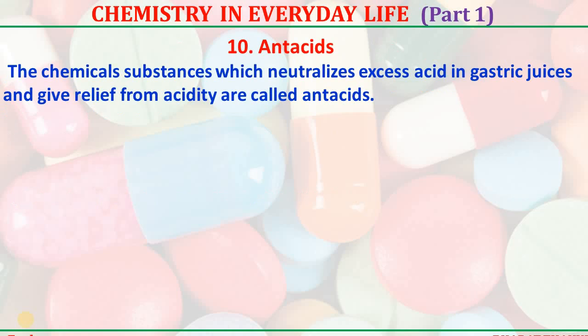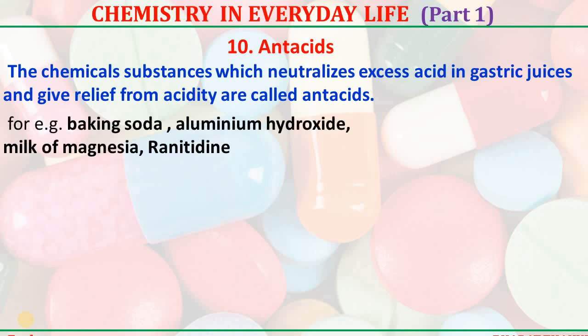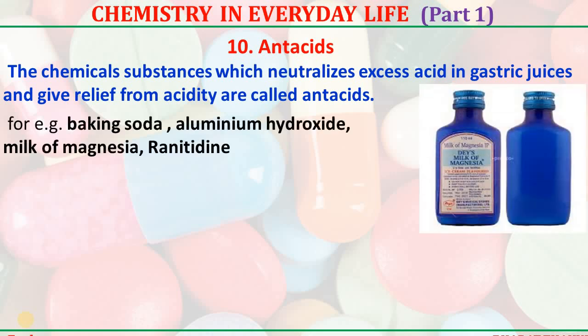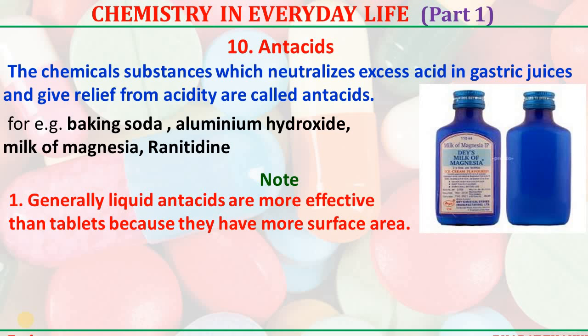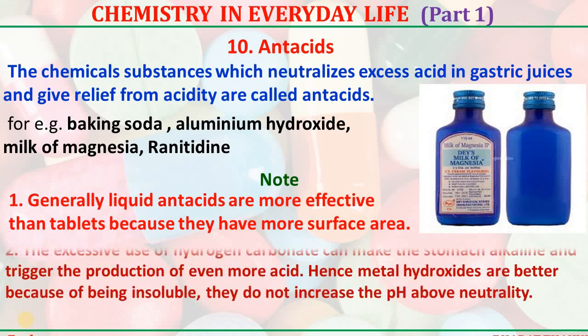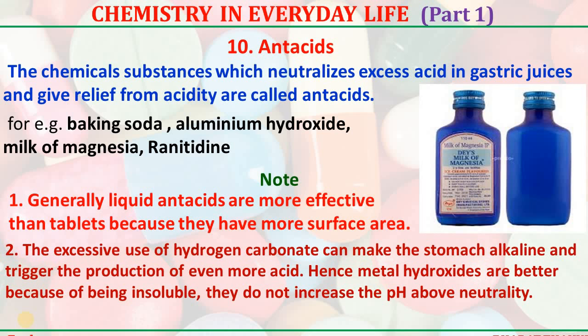Antacids — chemicals which neutralize excess acid in gastric juice and give relief from acidity are called antacids. For example, liquid antacids, aluminium hydroxide, milk of magnesia, and Rennie are common examples. Generally, liquid antacids are more effective than tablets because they have more surface area and are easily assimilated. The excessive use of metal carbonates can make the stomach alkaline and trigger the production of even more acid. Hence, metal hydroxides are better because they are insoluble and cannot increase the pH enough to trigger rebound acid.